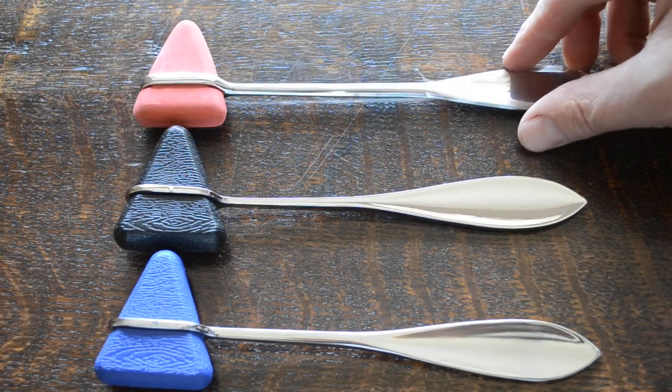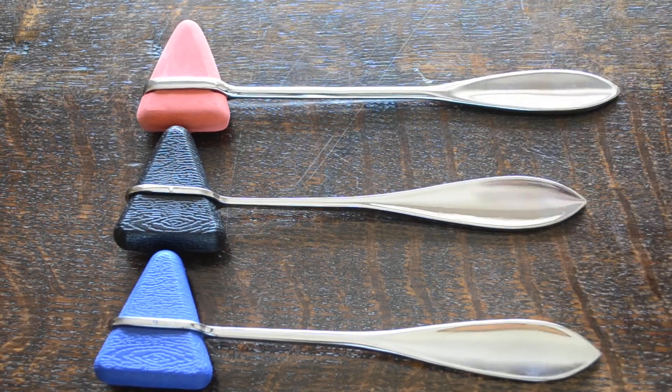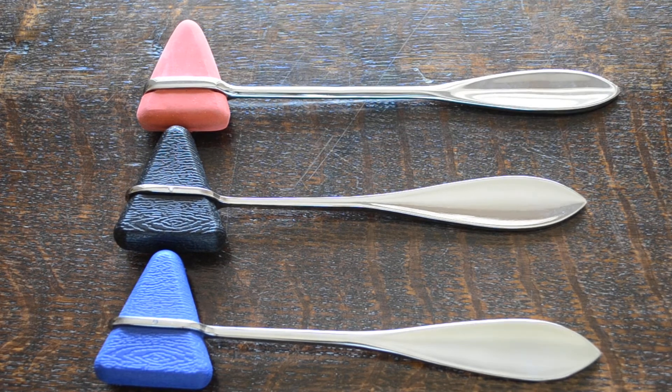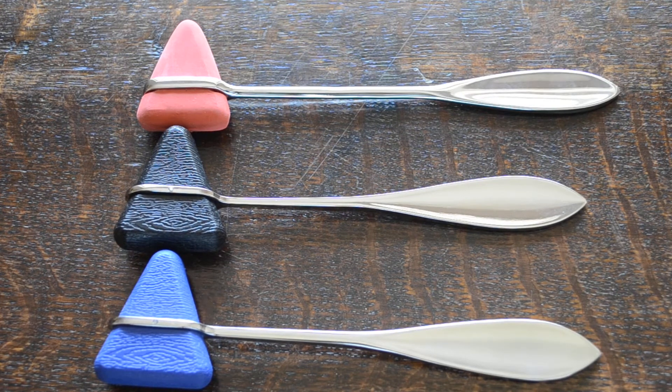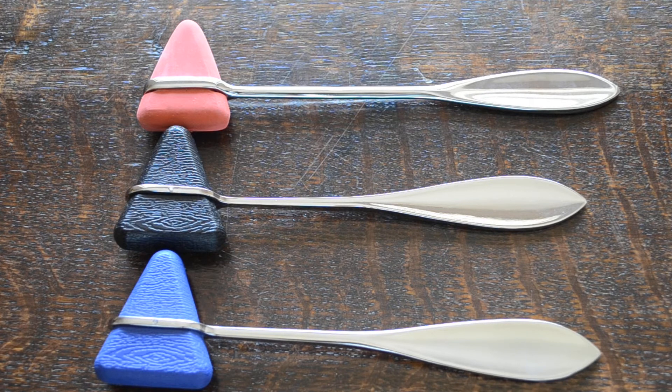So those are the three options that you've got if you're considering buying a Taylor's reflex hammer. They're all available for between three and four pounds. They're not expensive units to buy so they can be replaced as required.